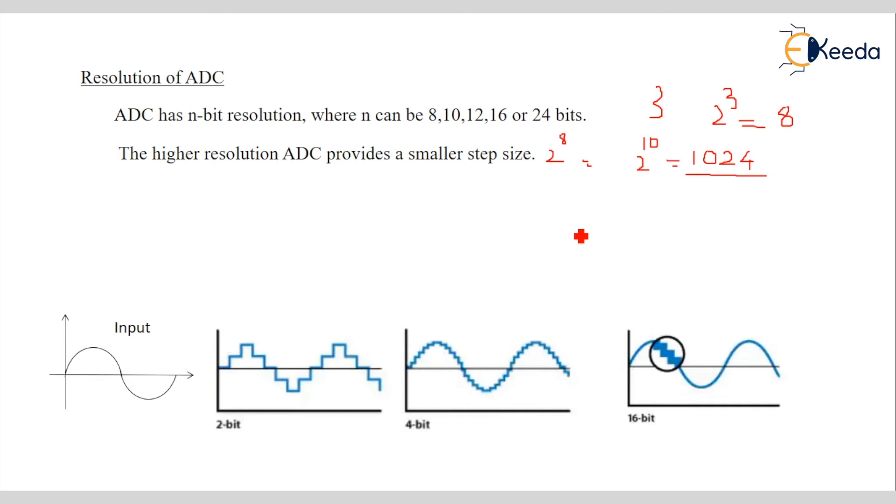Higher the resolution ADC provides the smaller step size. This is input signal. This is output signal for that analog signal. So, this number of step size, if I take a higher resolution, the step size will be smaller. So, we get exact same as input signal.